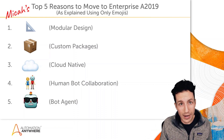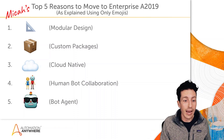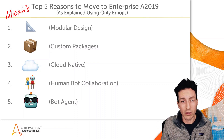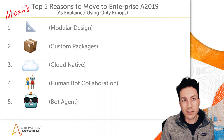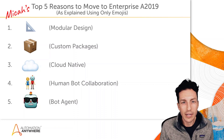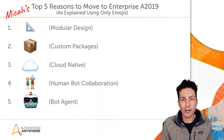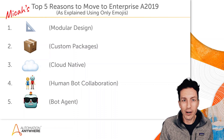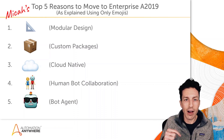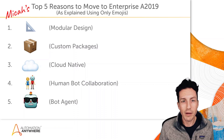That modular design is absolutely genius and allows my bots to be largely free from harm when upgrades occur. I don't have to be afraid when new features come out because my bot references specific versions of specific packages and nothing changes until I choose to upgrade. That's Micah Smith's top five reasons for moving to Enterprise A 2019 — let me know in the comments what you think and what your top five are. Go be great.